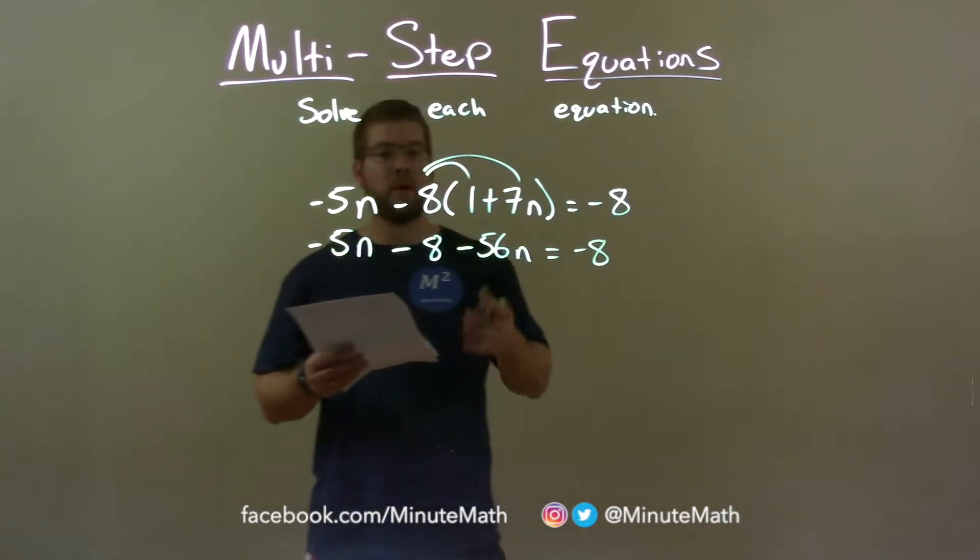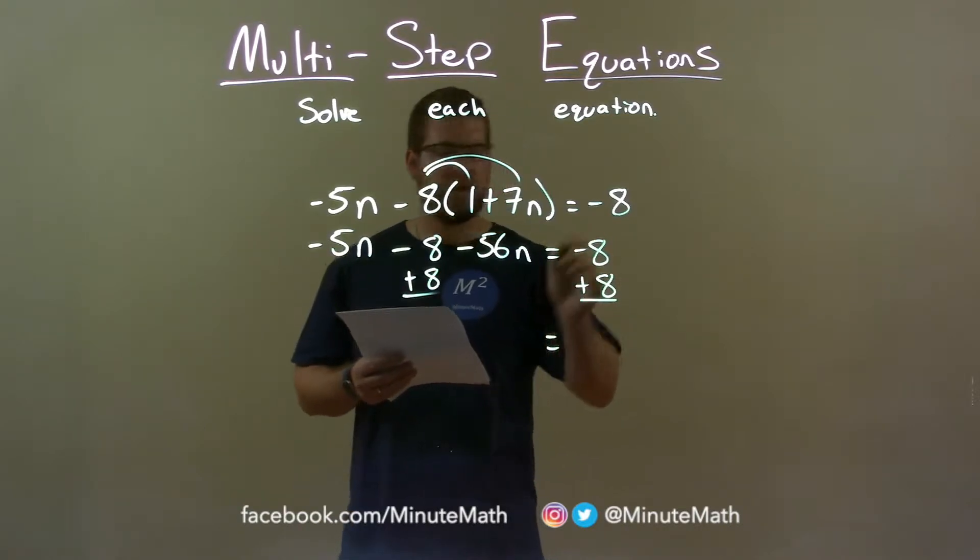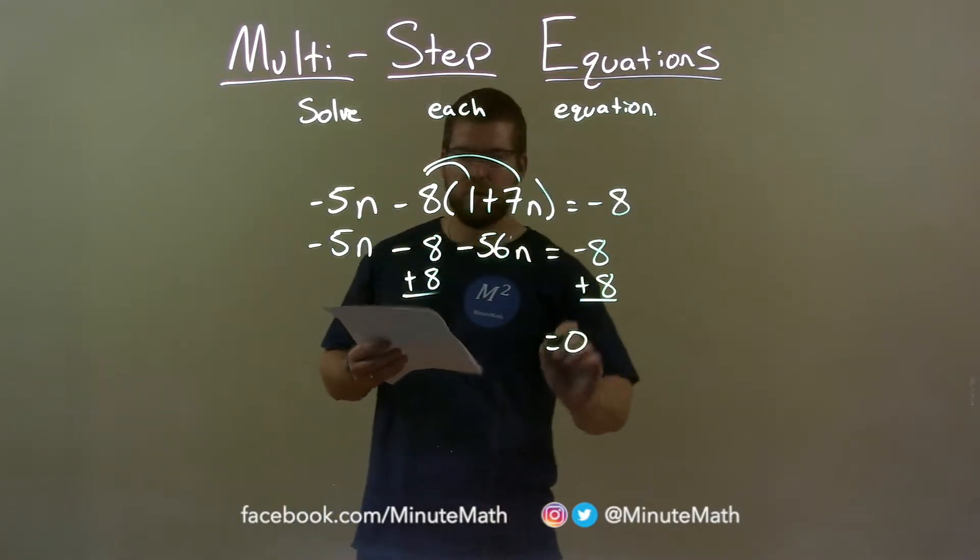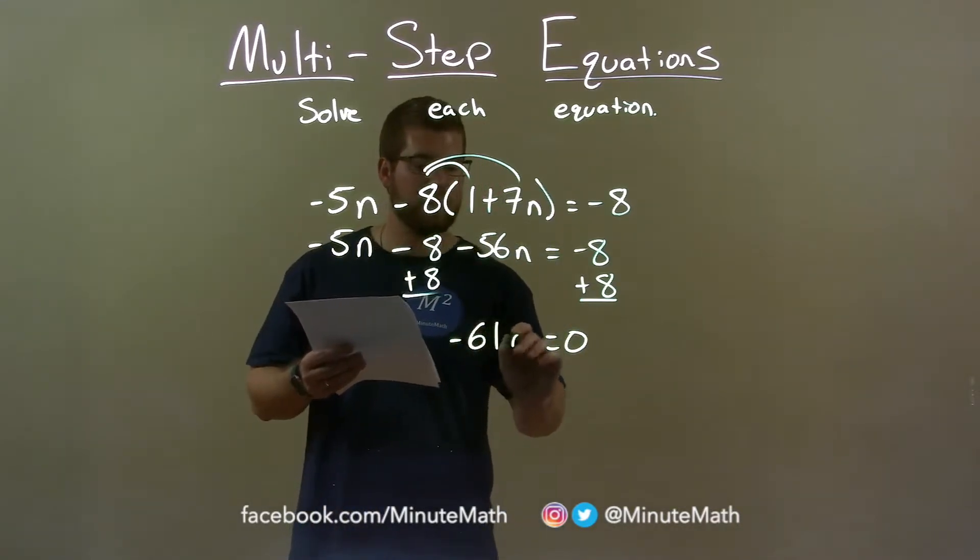From there we want to combine our like terms, so I'm going to add an 8 to both sides. Leaving me on the right negative 8 plus 8 is 0. Negative 5n and negative 56n come out to be a negative 61n.